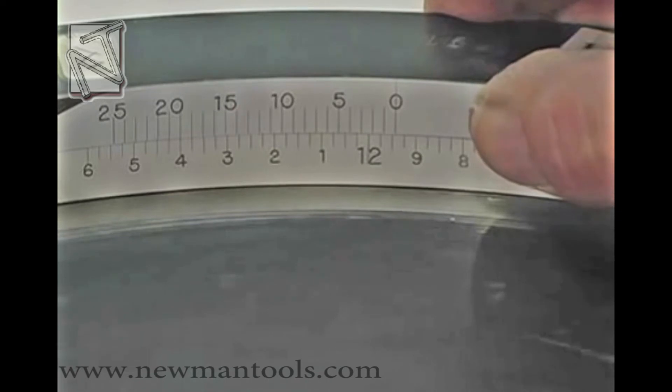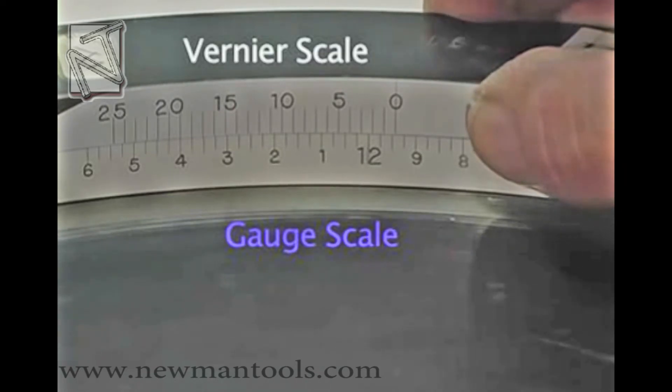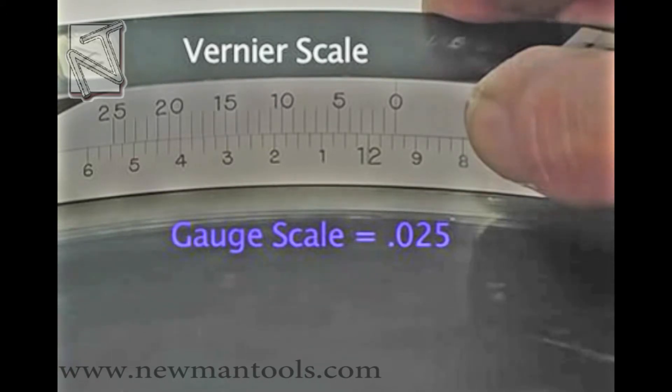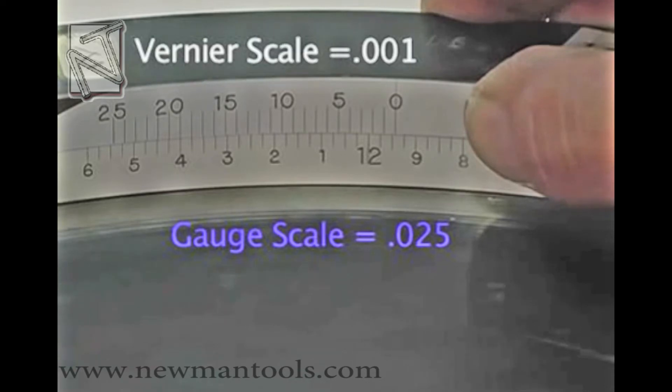Make certain the tape is flat and snug to the part so the gauge member is flat against the vernier scale. Each line on the gauge member represents 25 thousandths of an inch, while each line on the vernier scale represents 1 thousandths of an inch.